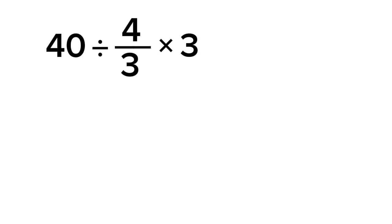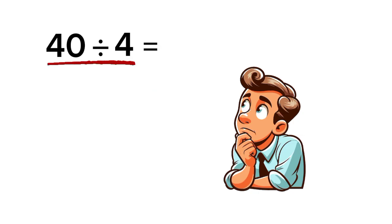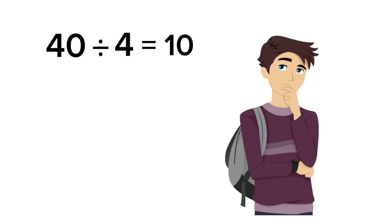Now, a lot of people rush into it like this. They see the multiplication and do it first. So they go, 4 thirds times 3, those 3's cancel, leaving just 4. Then they say 40 divided by 4 equals 10. And they stop right there, thinking the answer is 10. But that's not correct.